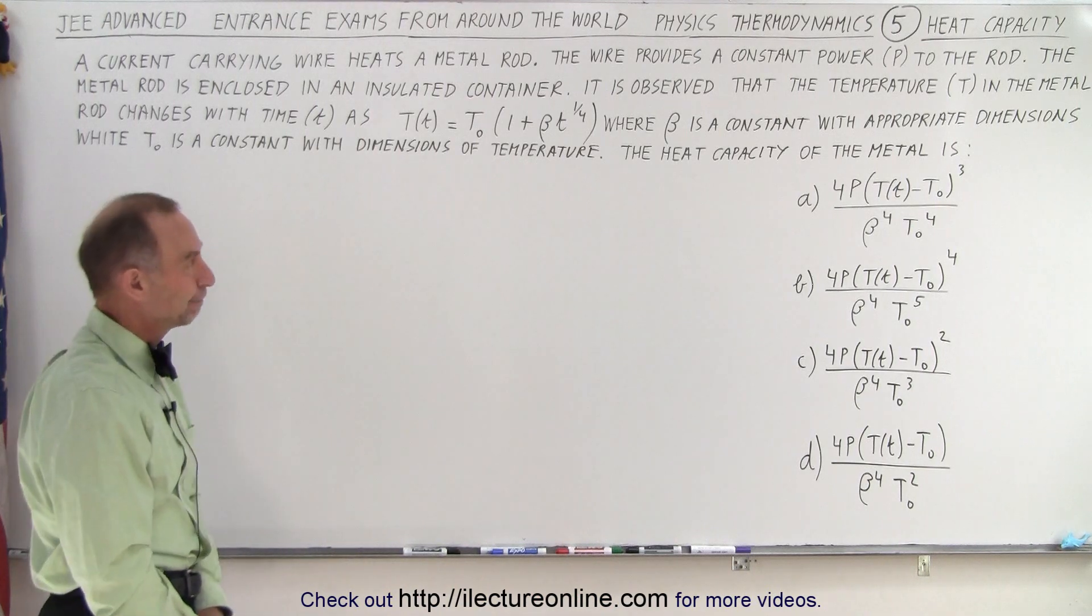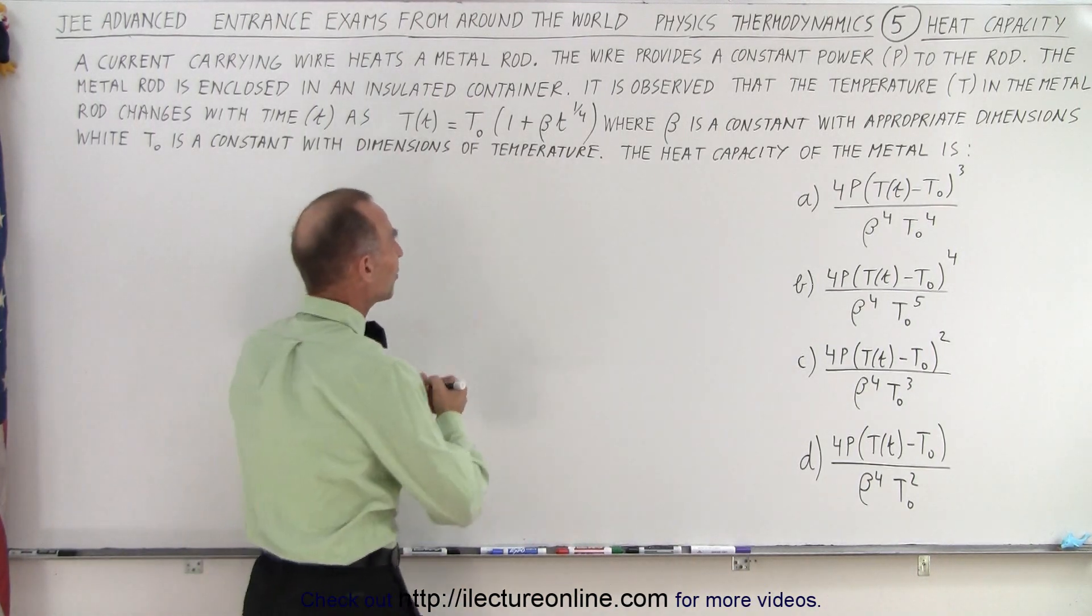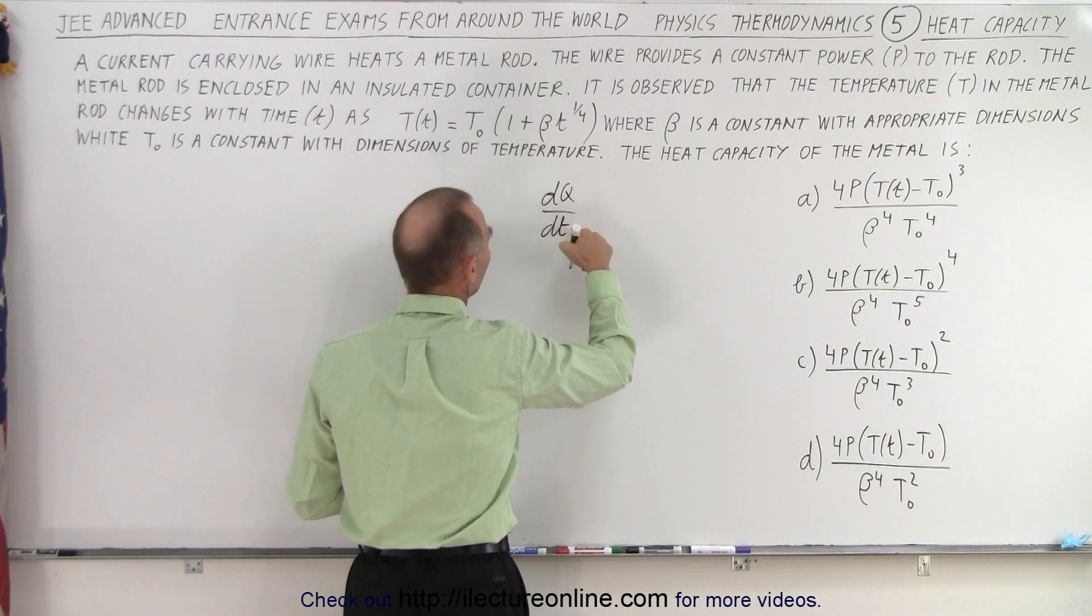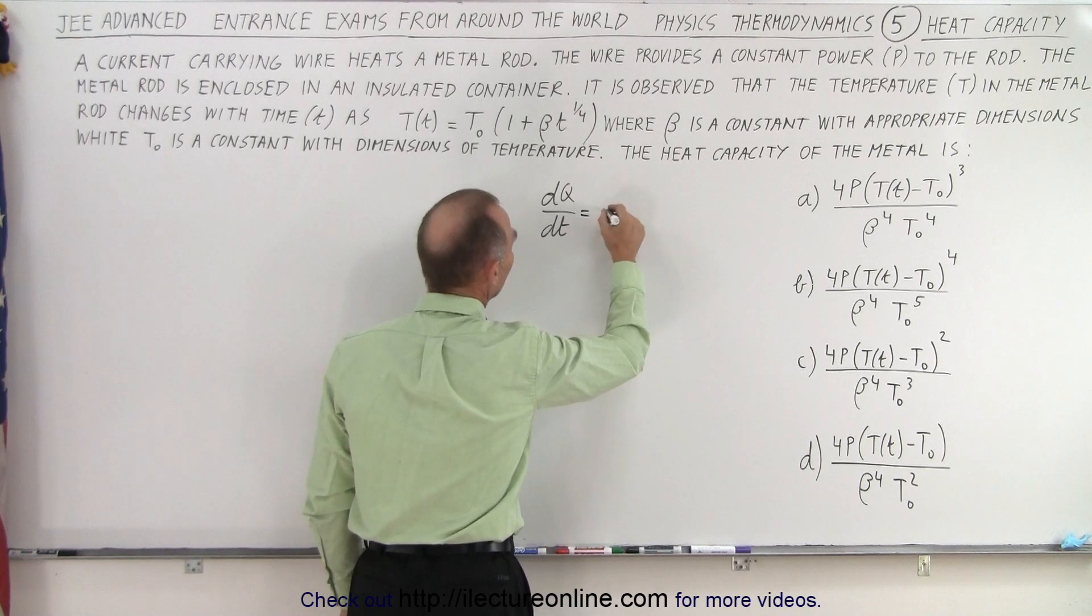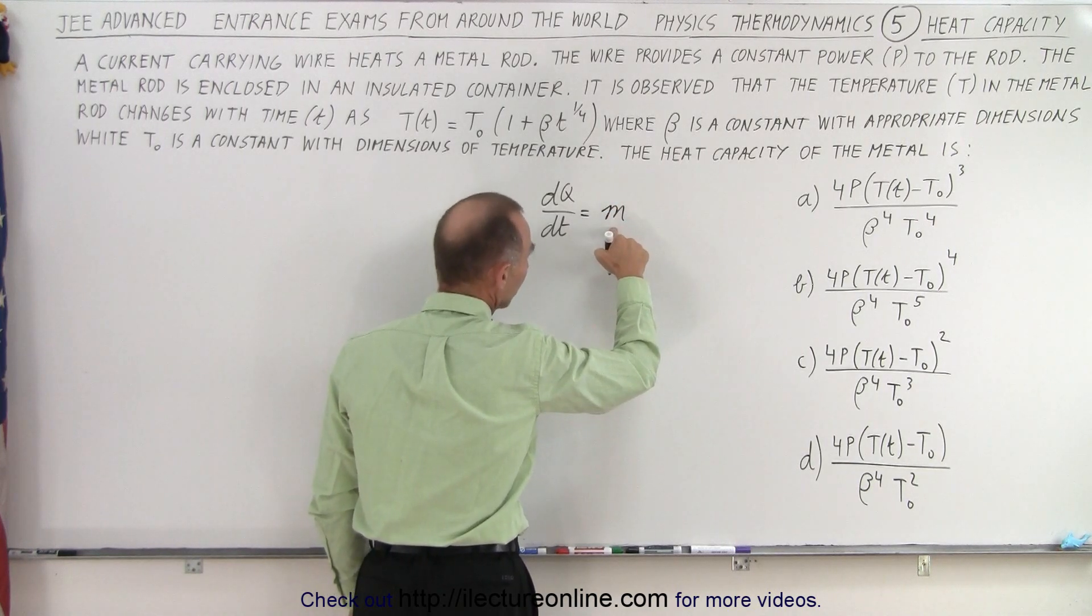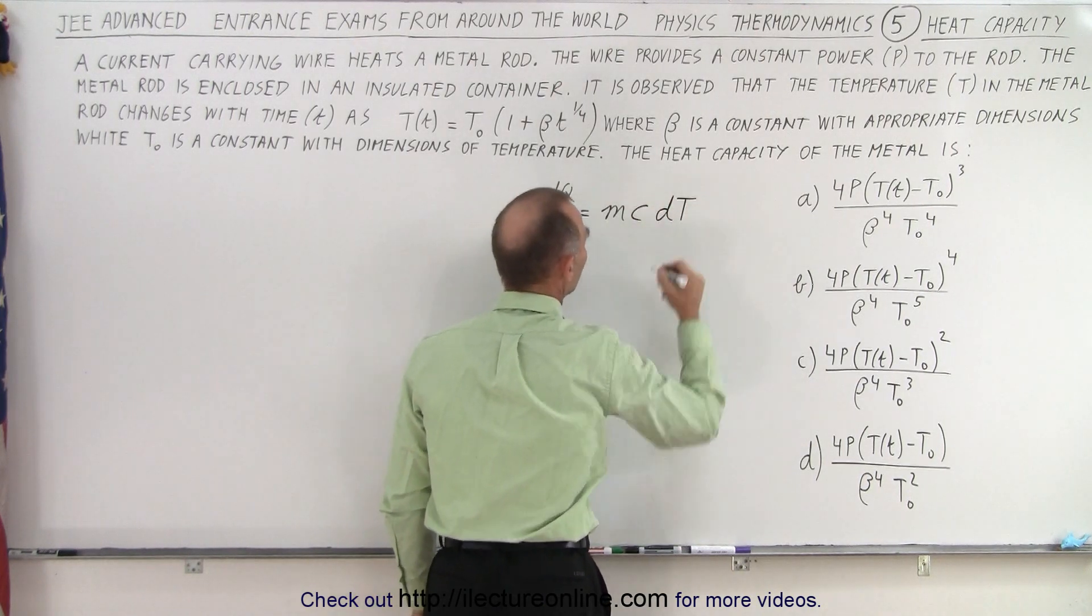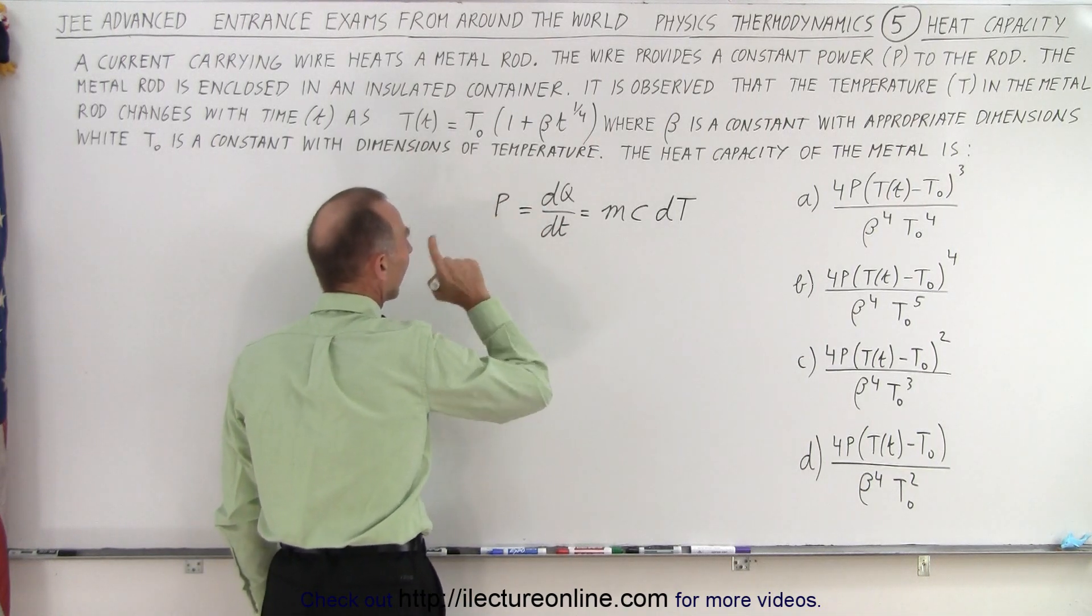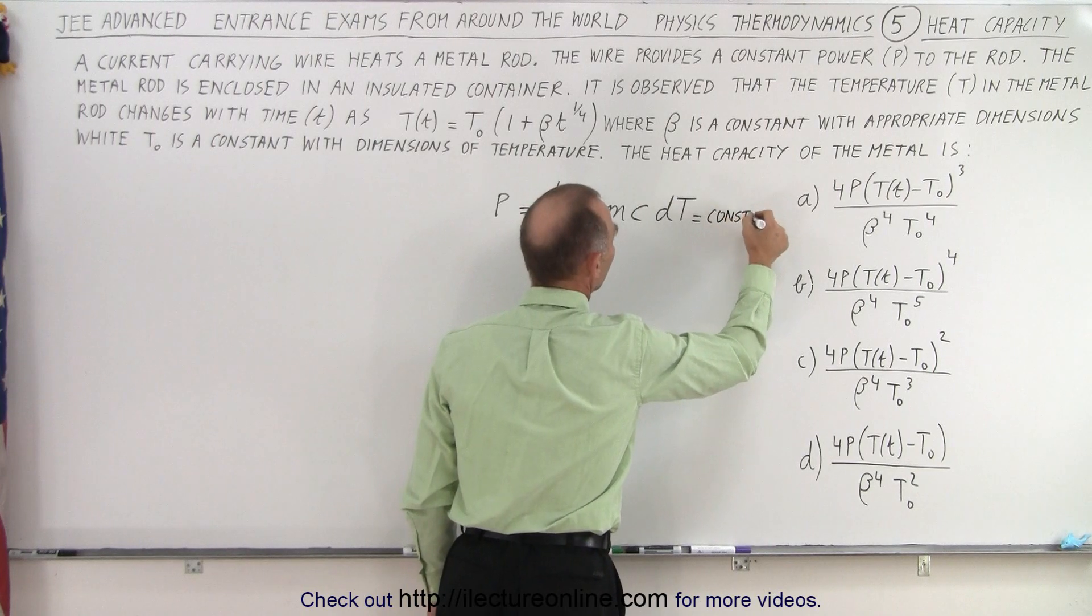Wow, where do you even begin? Now since we're dealing with heat capacity, the equation comes to mind that dq/dt, the heat exchanged as a function of time, is equal to m the mass times c the heat capacity times dT. And of course that would be equal to the power delivered, and we're told that this was constant. That's the key.